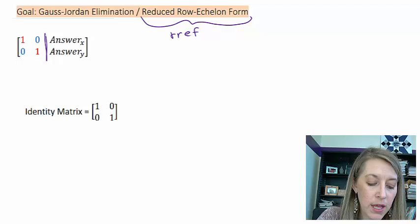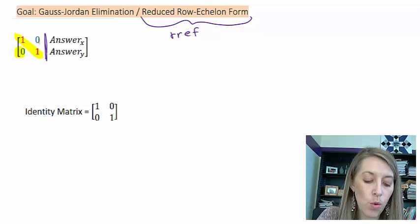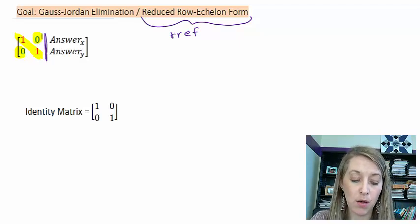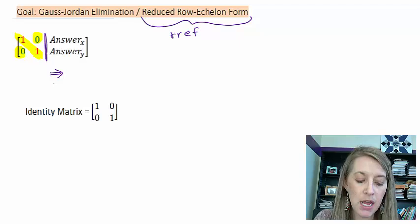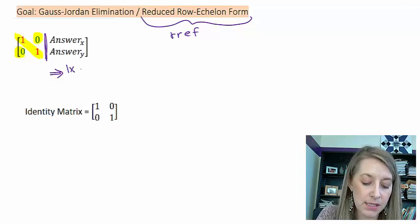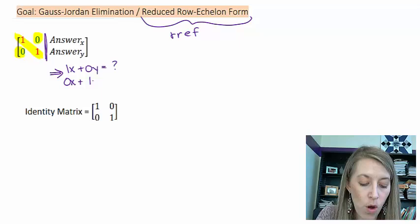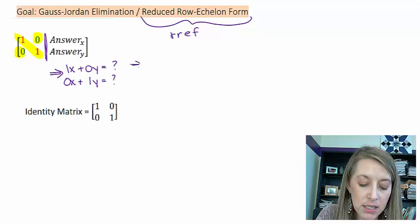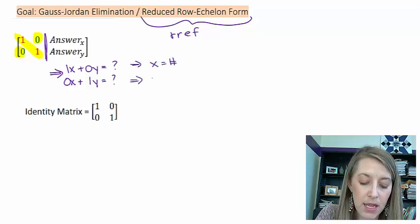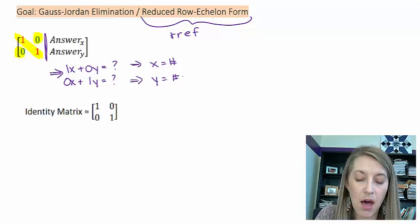Our goal is to get ones on the main diagonal with zeros below it, but we also want zeros in the opposite places as well. If I can get it into this format and put this back into a system of equations, this would be 1x plus 0y equals whatever answer I have for my x value, and 0x plus 1y equals whatever answer I have for my y value.